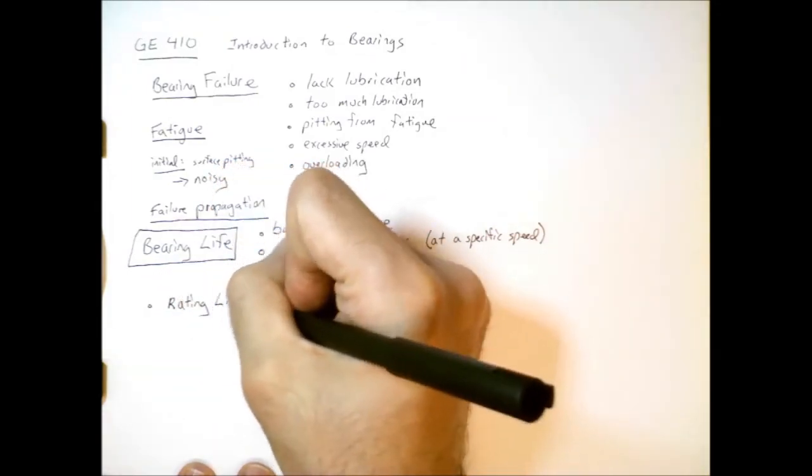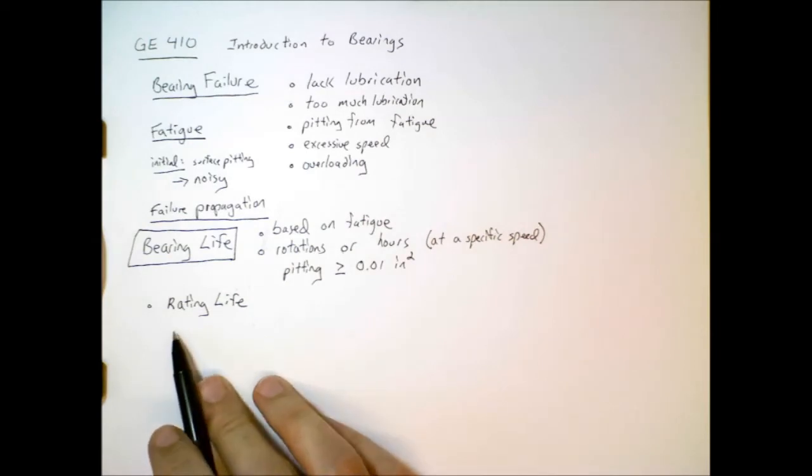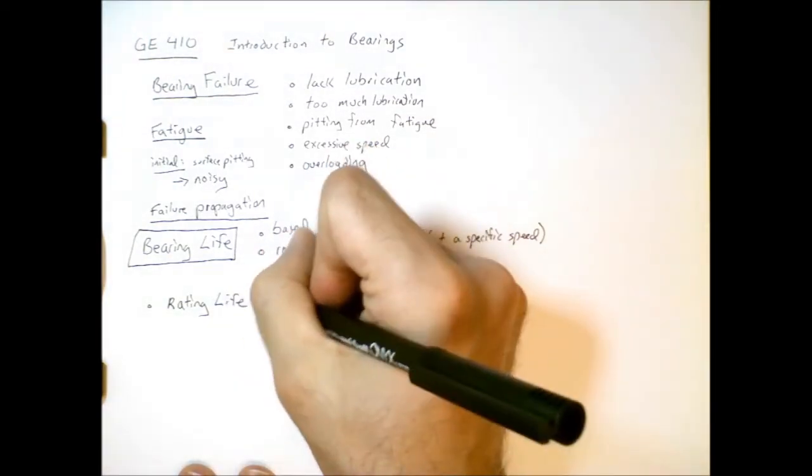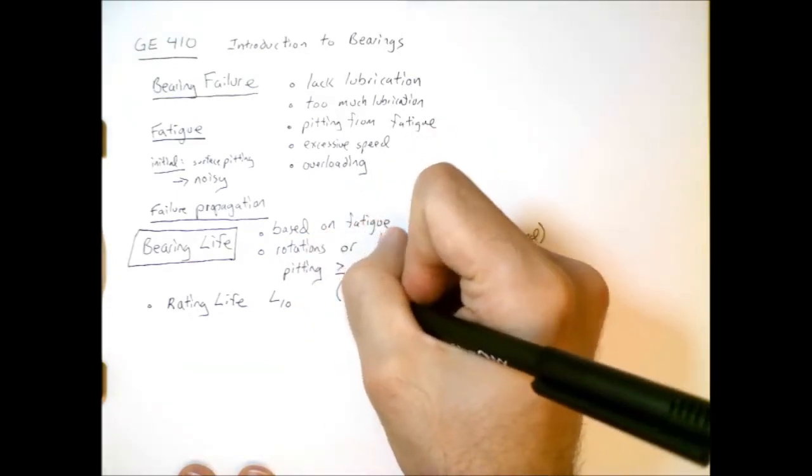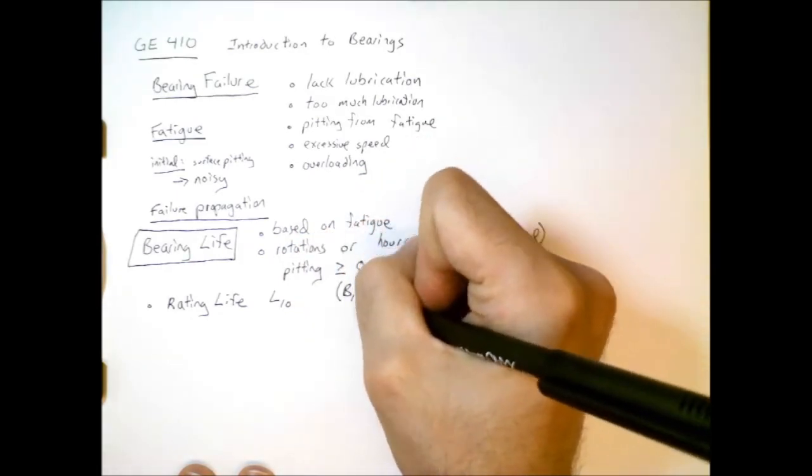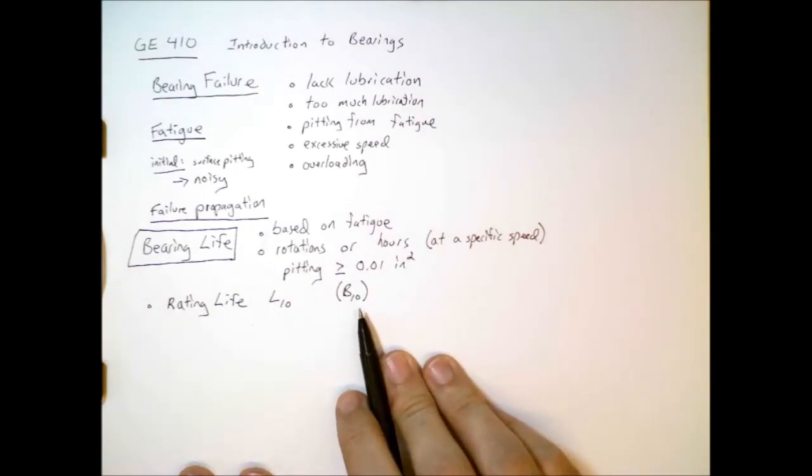The way we quantify bearing life is with this quantity called rating life. And the symbol we usually use for that is L-sub-10. Sometimes the symbol B-sub-10 is used in some bearing vendor catalogs, so you should be aware of that.